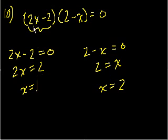And you could try them out, right? If x is 1, this becomes 0 times 1, which is of course 0. If x is 2, this becomes 2, right? 2 times 2 minus 2 is 2, times 0, which is 0.